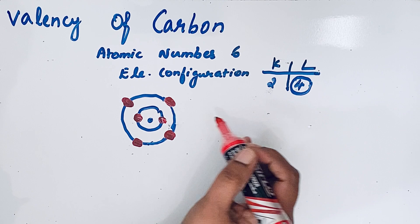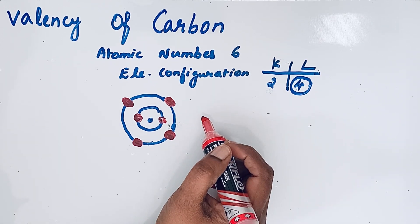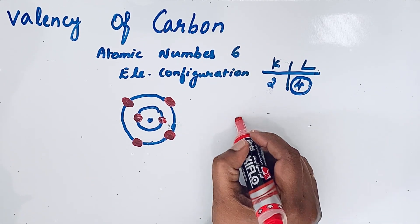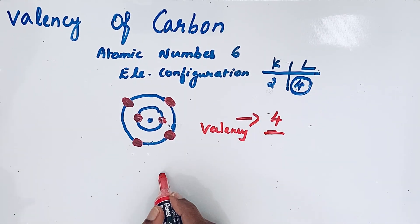So carbon needs four more electrons to complete that octet configuration. Therefore, the valency of carbon is four. Thanks for watching.